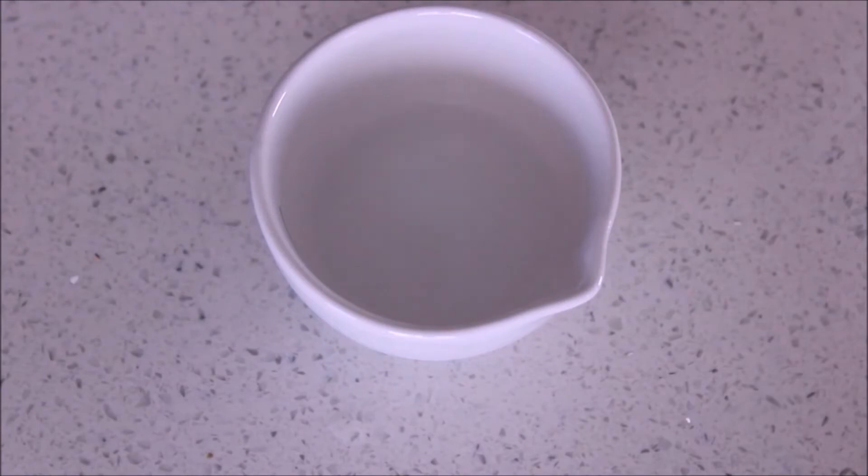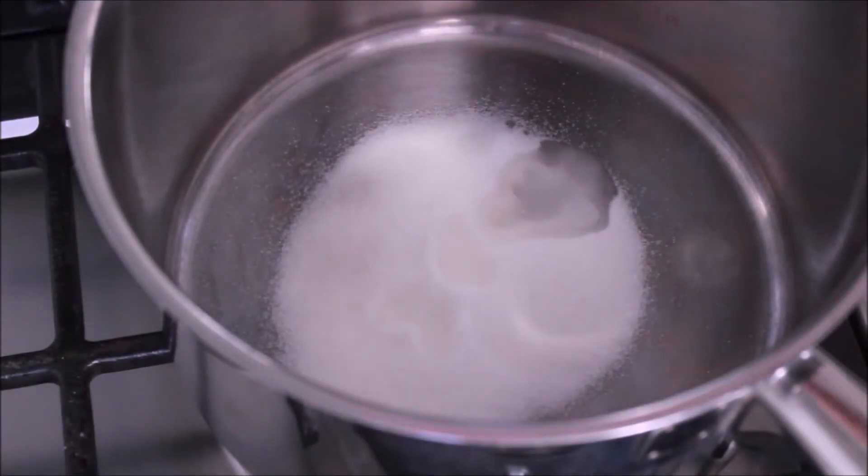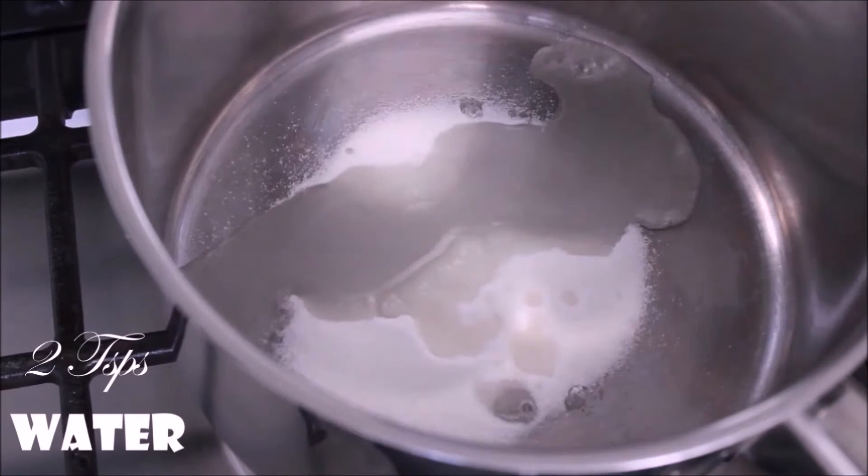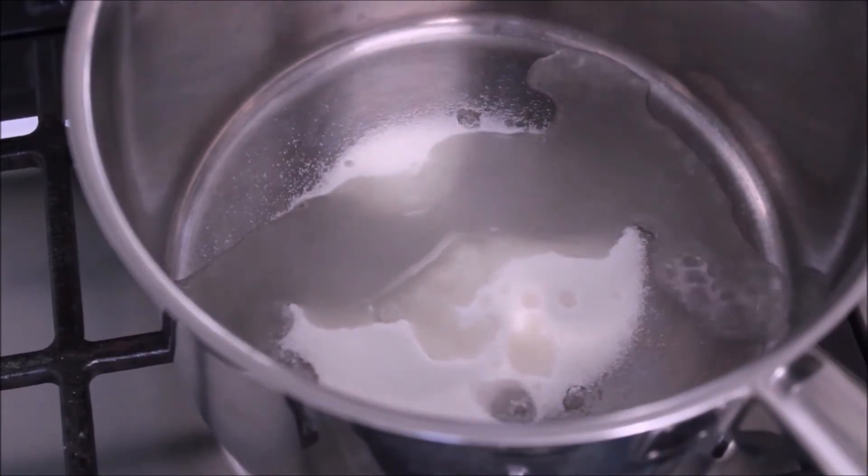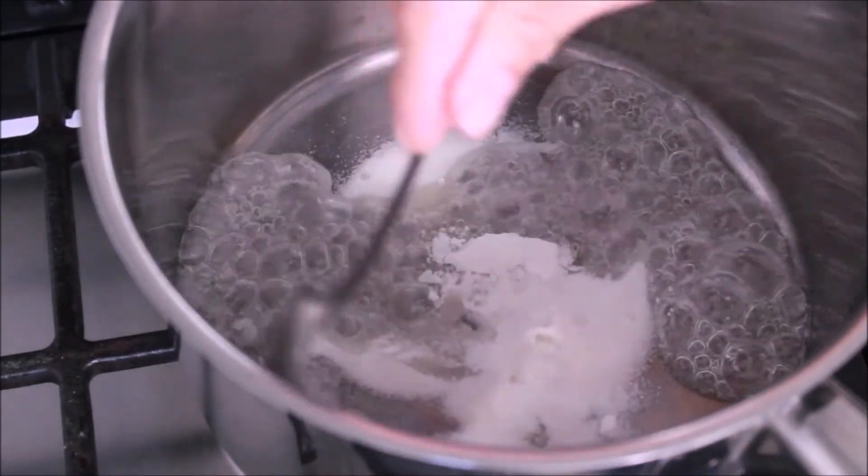For the salted caramel one, you're going to do pretty much the same thing. One tablespoon of water and one teaspoon of gelatin. To make the caramel, you need 100 grams of caster sugar and I added two teaspoons of water. At this point I should have given it a little mix, but it's okay. The only thing is that the sugar will take a bit longer to melt because you'll get these lumps of sugar.